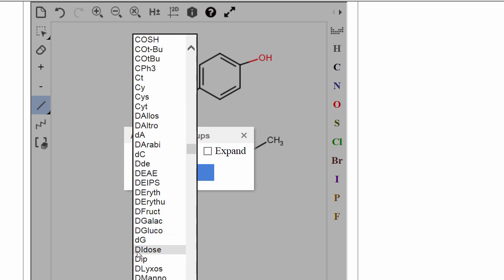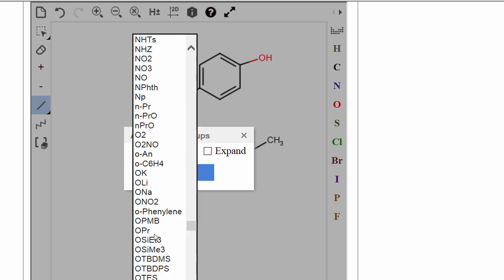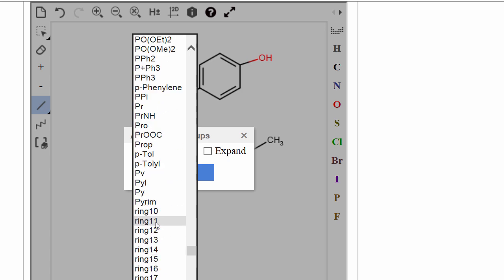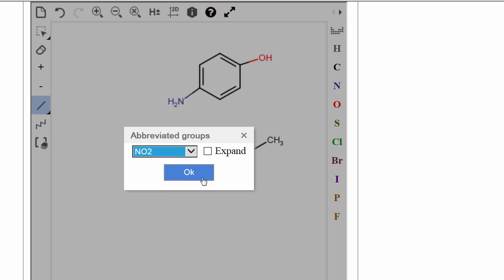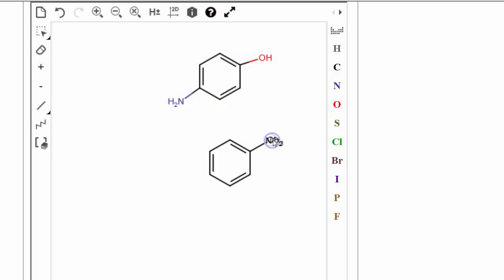Right here are all of the different groups that I can add. I need to go down here to the N. Here is the NO2 group, the nitro group. I can click that, click OK. Here we see our nitro group, and I'll just click here. It replaces the methyl group with the nitro group.